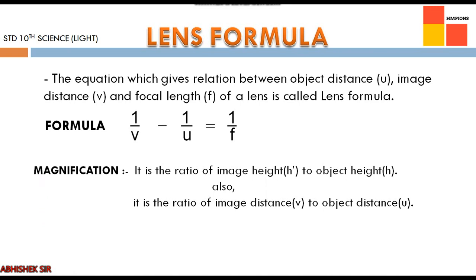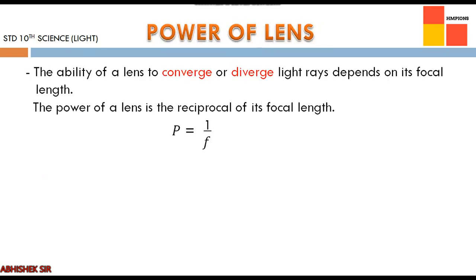Magnification is the ratio of image height to object height, expressed as m = H' / H. It can also be expressed as the ratio of image distance to object distance, so m = V / U. Note that Cartesian sign convention must be followed when finding magnification.